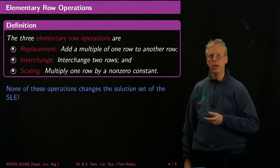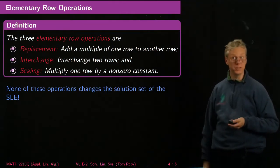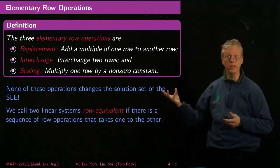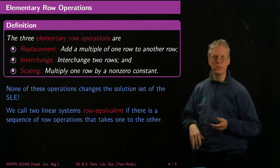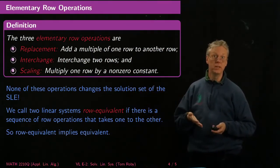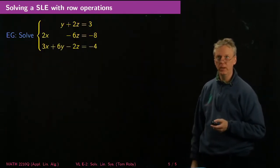None of these operations changes the solution set of the system of linear equations. That's the key idea. And we'll call two linear systems row equivalent if there's a sequence of row operations that takes one to the other. The idea here is that row equivalent implies equivalent in the sense of having the same set of solutions.